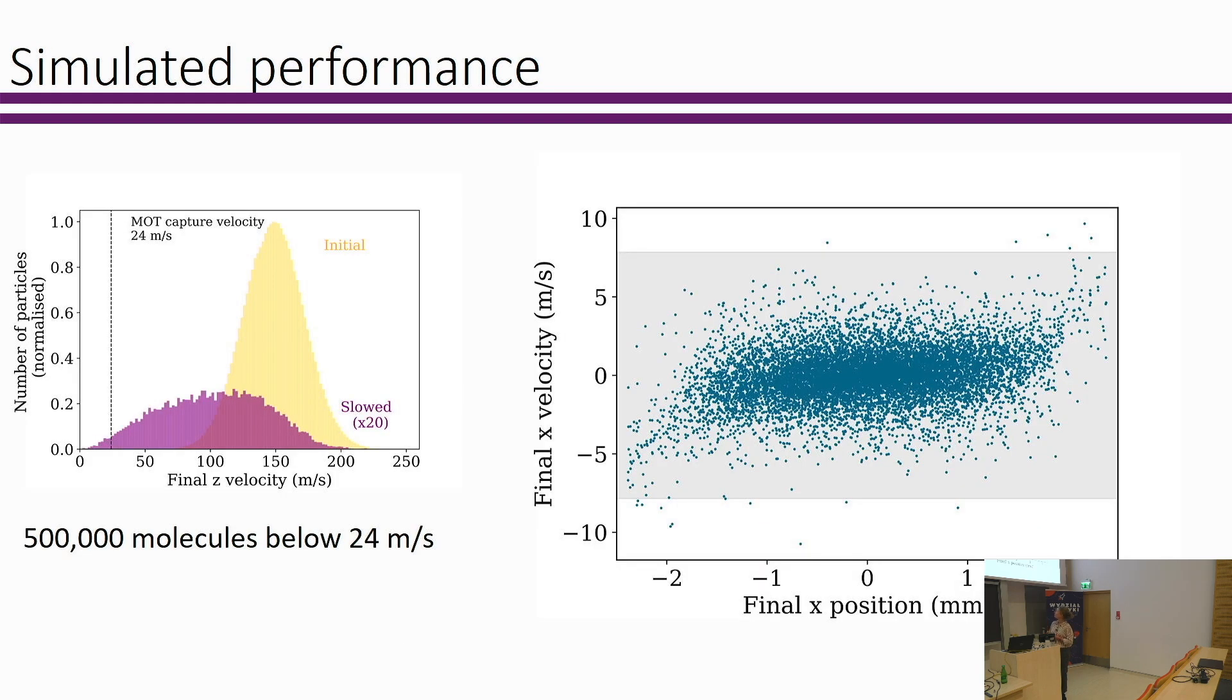We also had a look at what the phase space is for the molecules as they leave the decelerator. This is a plot showing the velocity versus the position of the molecules as they exit. One of the reasons we looked into this is because we were worried that the beam was just going to plume out. In fact, the transverse velocity distribution is very small for the molecules leaving.